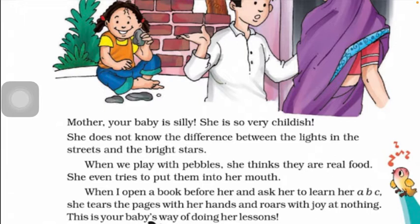She does not know the difference between the lights and the bright stars. She does not know that these bright stars and our street lights are different things. The stars are different and the street lights are different - she does not know that difference.